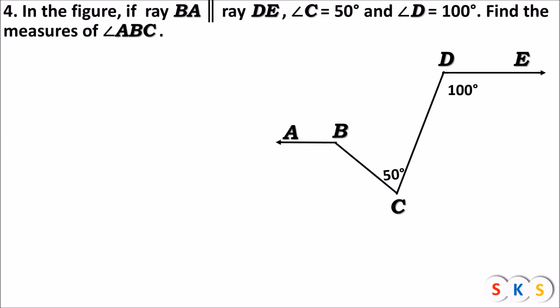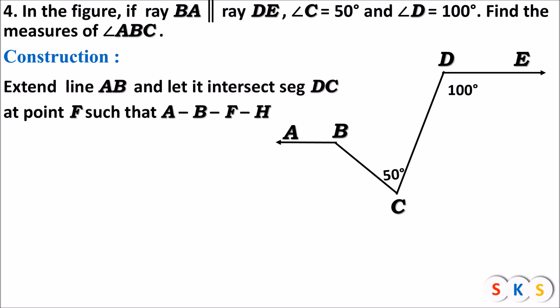Here we have the next question. In the figure, if ray BE is parallel to ray D, angle c equals 50 degrees and angle d equals 100 degrees, find the measure of angle ABC. We will do a construction — we will extend line AB and let it intersect segment DC at point F, such that A–B–F–H. I have extended line AB so it intersects segment DC at point F, and taken one more point H on this line.